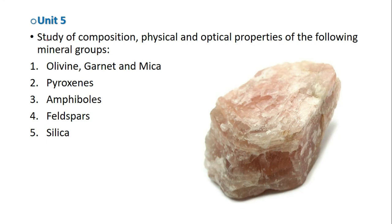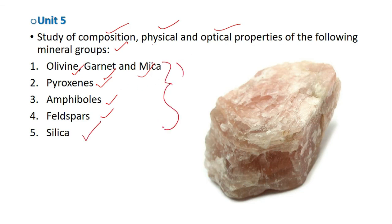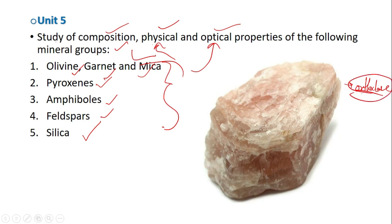Unit five covers the study of composition, physical and optical properties of the following mineral groups: olivine, garnet, mica, pyroxenes, amphiboles, feldspars, and silica. Here is an example — orthoclase, a beautiful pink-colored mineral. With this we've had a look at the syllabus for part one and part two.